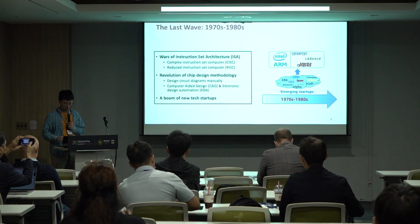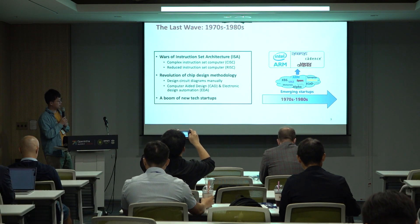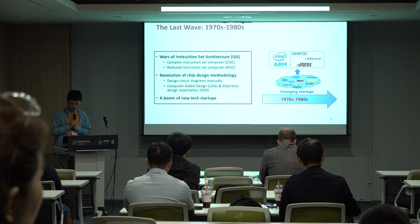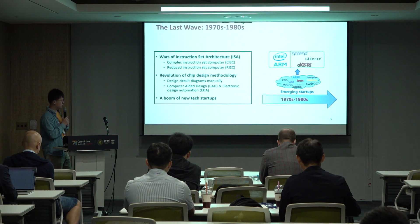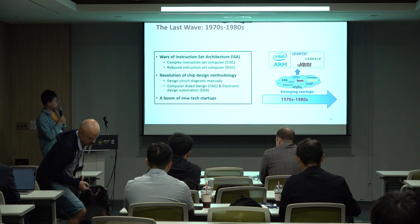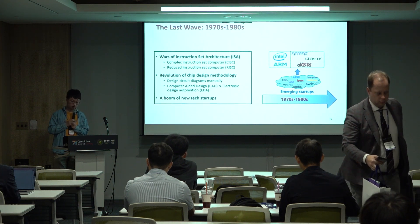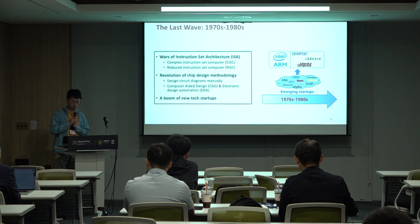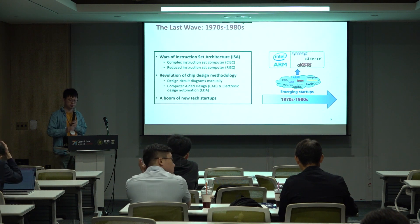Let's go back to the last century and see the technology transformation over maybe 50 years. In the 1970s to 1980s, there were some emerging startups that proposed fundamental technologies like instruction set architecture and chip design methodology, including CISC and RISC. They also built the EDA industry. At that time, there was a boom of new technology startups — this is the last wave we observed in the computing industry.